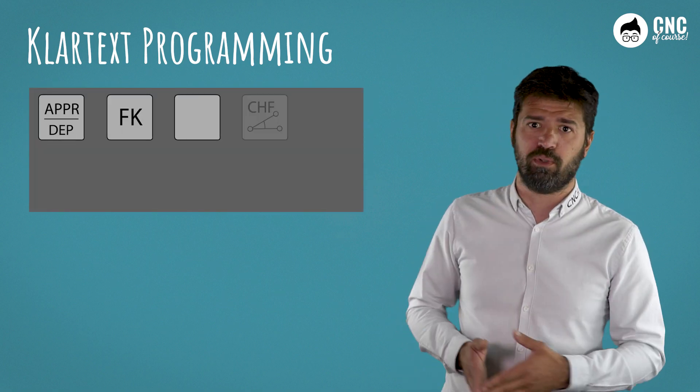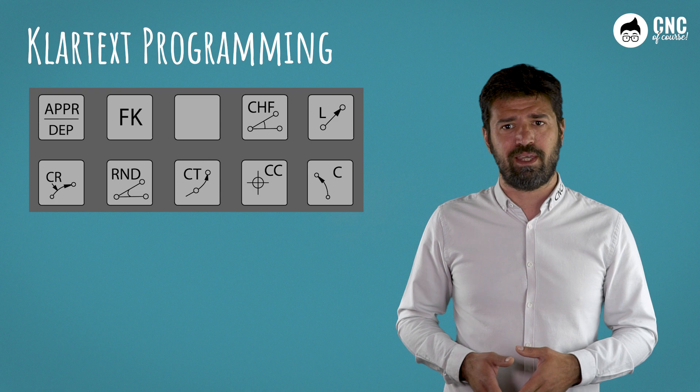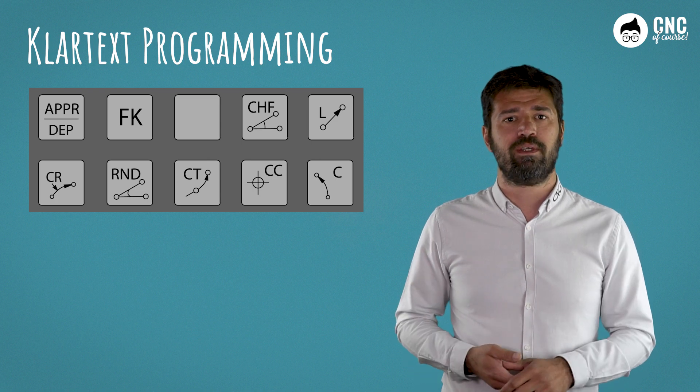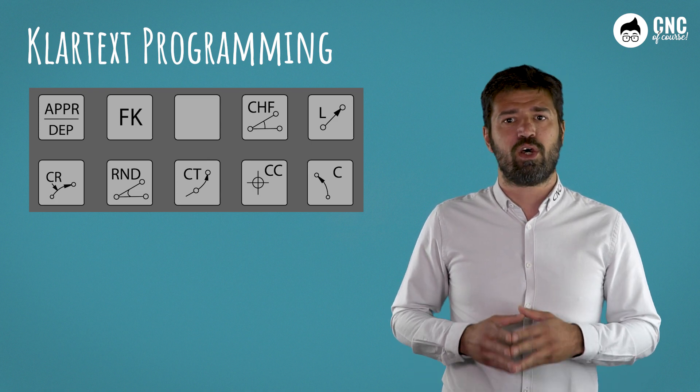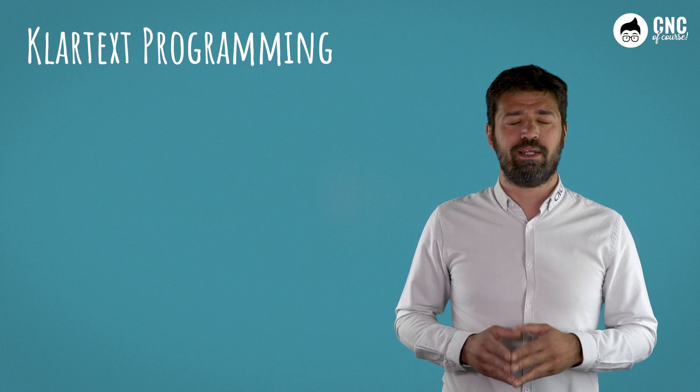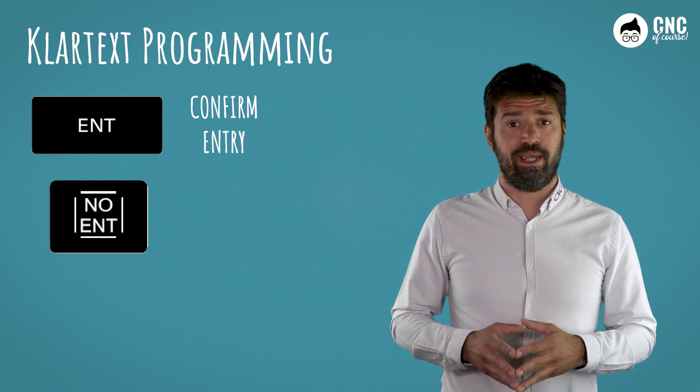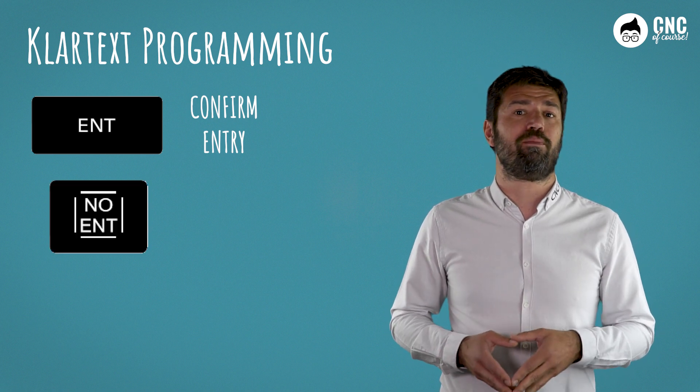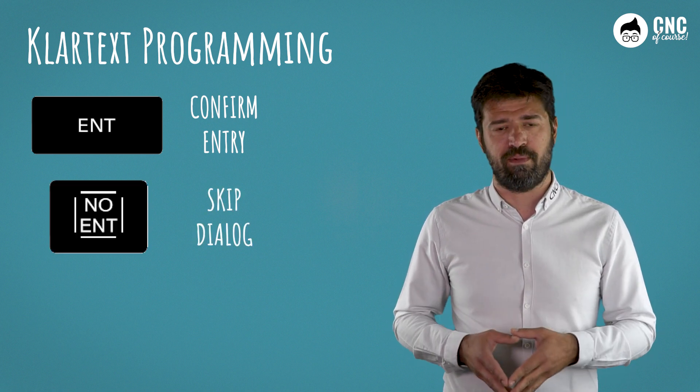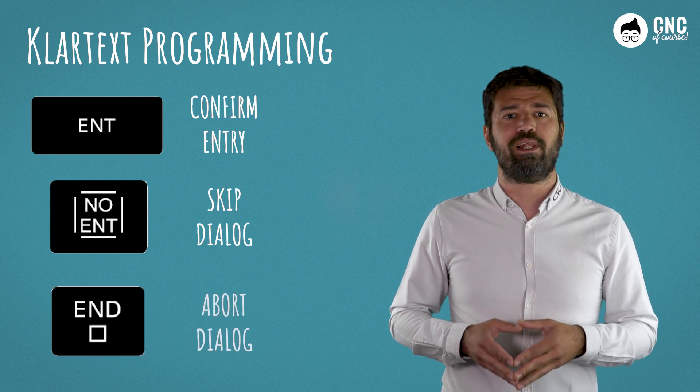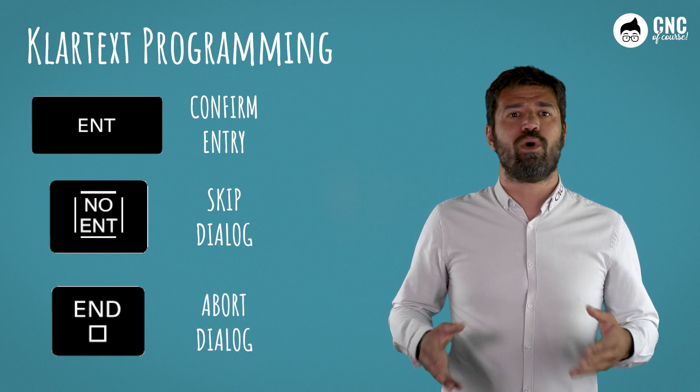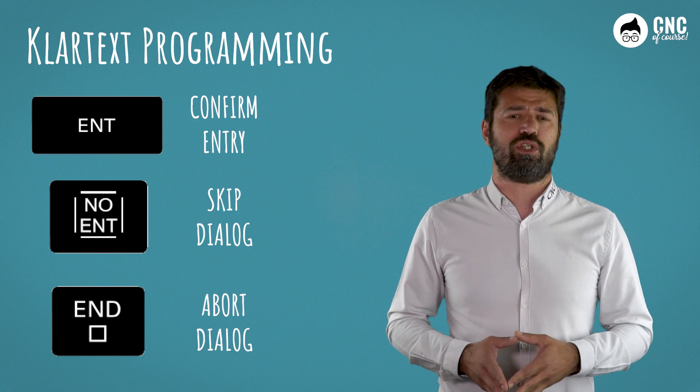With this other set of keys, you can manage movements and the creation of geometric contours. The conversational system revolves around three main buttons: Enter, to confirm the entry and move to the next question; No Enter, to skip the dialogue and go directly to the next question; and End, to abort the dialogue. This will be the language we will be dealing with during this cycle of lessons.